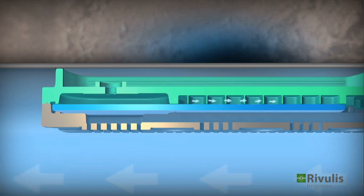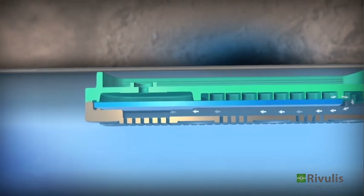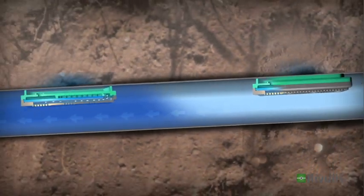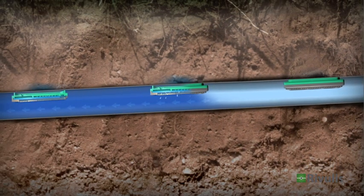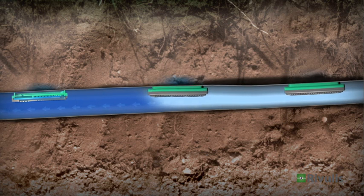Pulled by gravity, the water in the tube drains out through the lowest part of the drip line. The drip line is now ready for the next flawless irrigation cycle and many more to come.